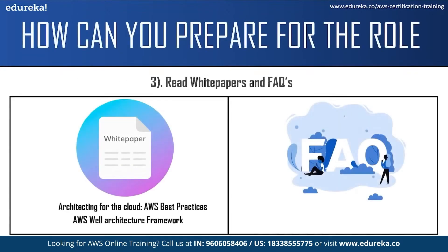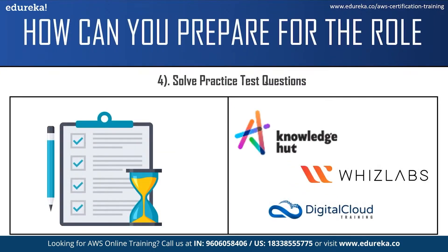The next step is referring to white papers and frequently asked questions. White papers will give you technical knowledge about various AWS concepts and services. Two of the best white papers for the certification are 'Architecting for the Cloud: AWS Best Practices' and 'AWS Well-Architected Framework'. The FAQs will help you clear your doubts regarding the certification. Following that, the next step is solving practice test questions, which you can find on websites such as Knowledge Hut, Whizlabs, and Digital Cloud Training.